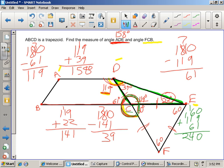So now I'm going to take this 240 and subtract from 360. 360 minus 240 equals 120 degrees. Angle FCB equals 120 degrees.